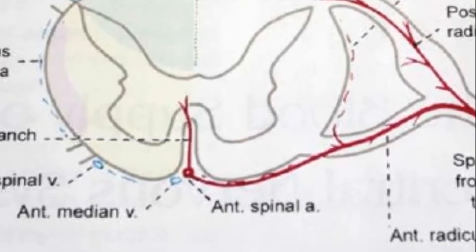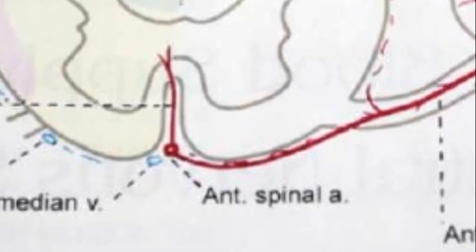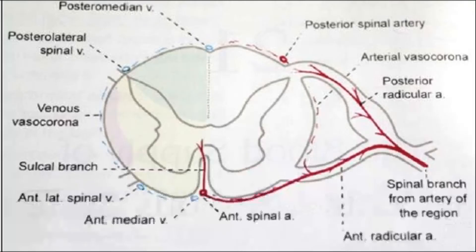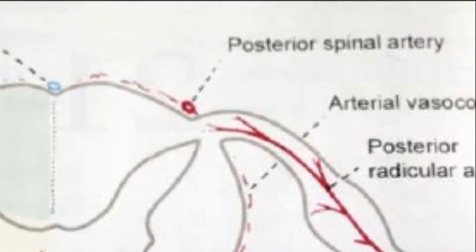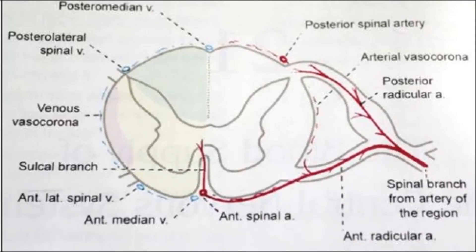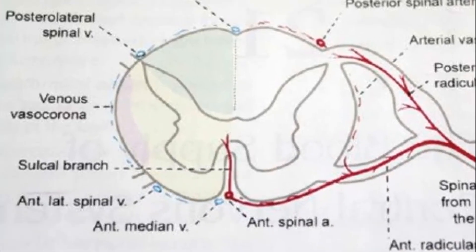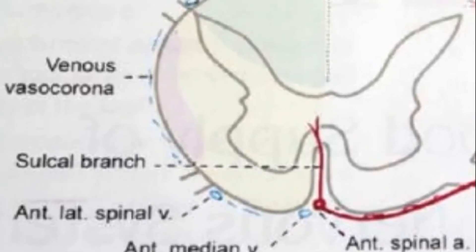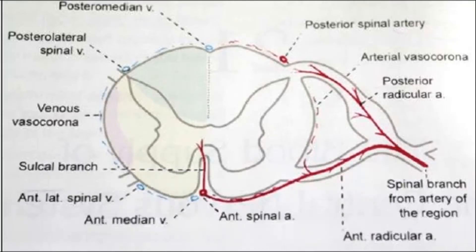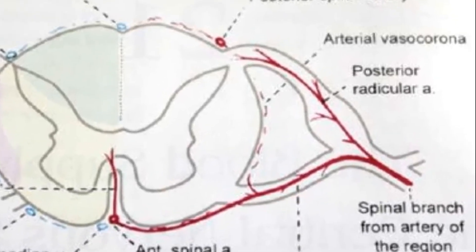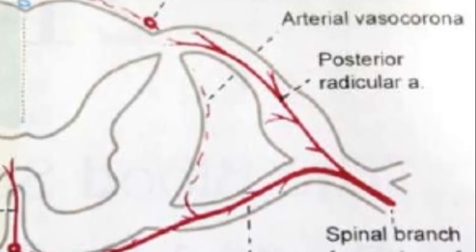For further vasculature, remember the anterior spinal artery coming from the anterior side, and the paired posterior spinal arteries from the posterior side. You also have a sulcal artery which goes through the sulcus — you can see the sulcal branch. The anastomosis between the anterior and the posterior spinal arteries is known as the vasocorona.